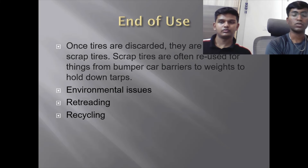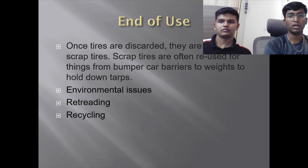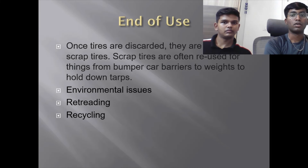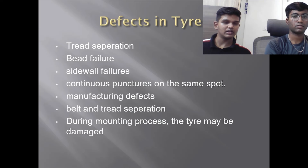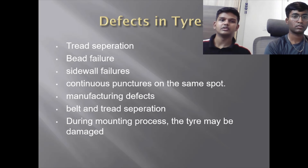At the end of their life, once tyres are completely worn out and no longer fit for use, they are discarded and considered scrap tyres. Scrap tyres are often reused for things like bumper tyre barriers or weights. Regarding defects — since tyres are produced in mass quantities, we can expect some defects such as tread separation, bead failures, sidewall failure, continuous puncture on the same spot, and manufacturing defects.